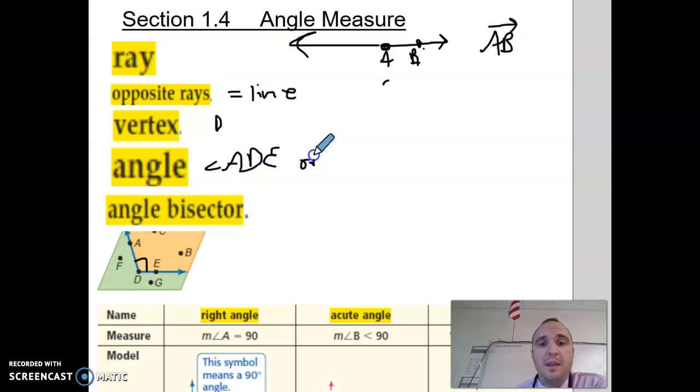You can also name this angle, or you can name it angle E, D, A. No way in any world can you ever say that it's A, E, D, because that's not in order. See how it bounces around? You can't go out of order.